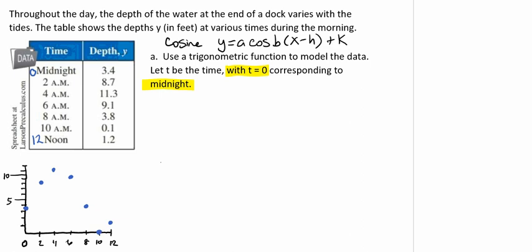Remember that a cosine function is y equals a times the cosine of b times the quantity x minus h plus k. So we need to find our a, b, h, and k in order to do this.